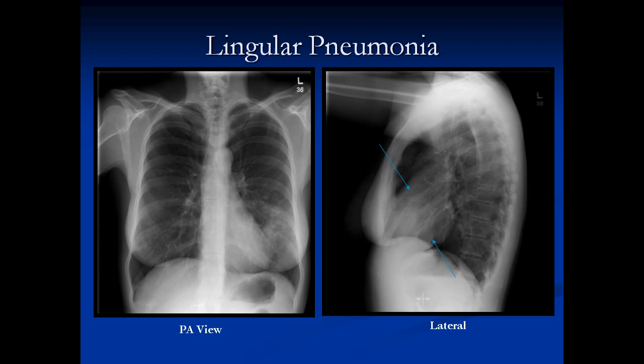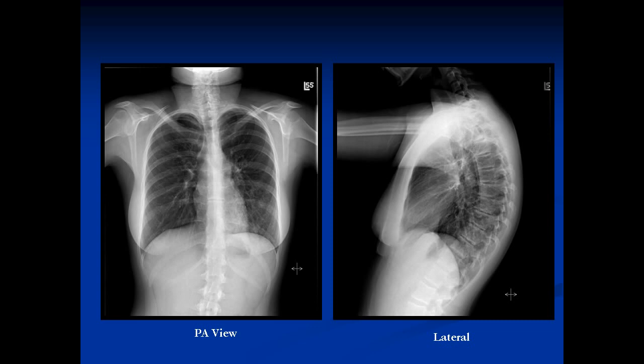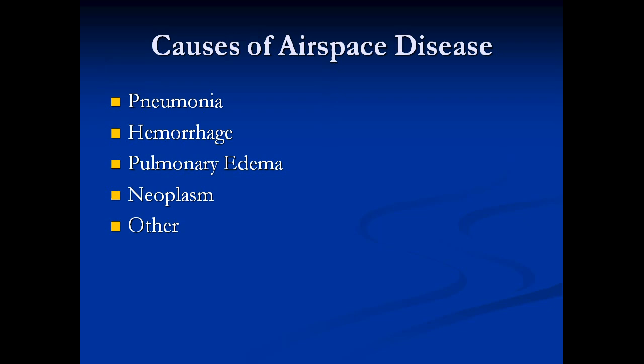Sometimes it's difficult to see on the lateral view, but on the PA view, if you don't have the heart border, then there's consolidation in the lung. What border is missing here? We can see all the borders on the PA view. On the lateral view, we have the right diaphragm going all the way to the front and the left diaphragm stopping at the heart, but we can't see the posterior aspect of the left diaphragm — this is a left lower lobe pneumonia. Going down the spine, it should get blacker but instead it gets whiter, and that's where the pneumonia is.